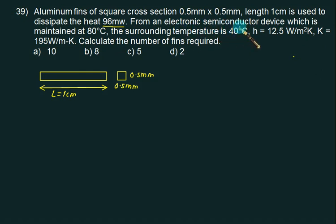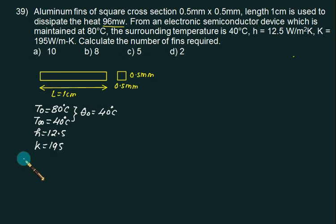We have T0 equal to 80 degrees Celsius, surrounding temperature T infinity equal to 40. So we can calculate theta 0, T0 minus T infinity is 80 minus 40, same as 40 degrees Celsius. We are given the value of H equal to 12.5, K equal to 195, and we want to calculate number of fins.